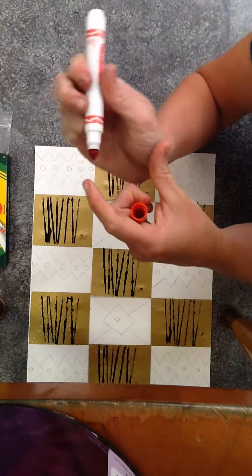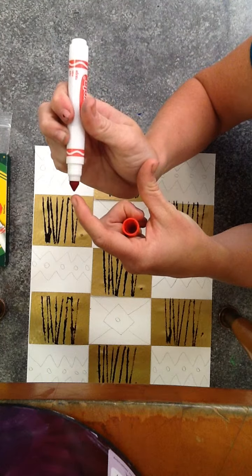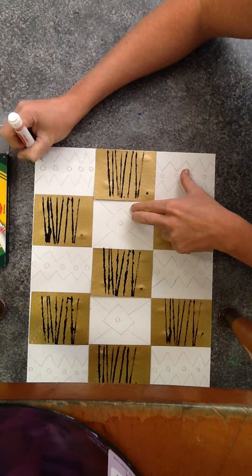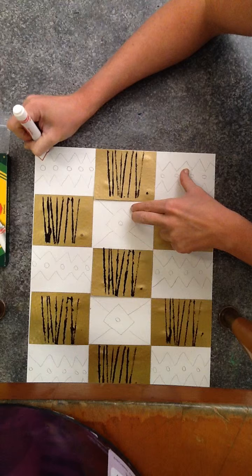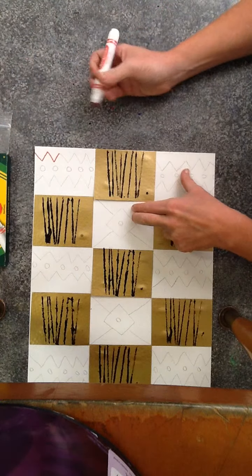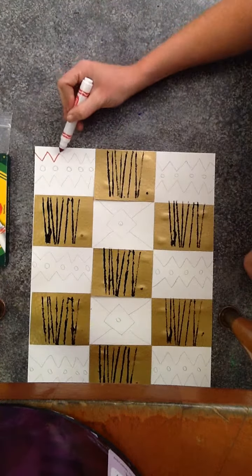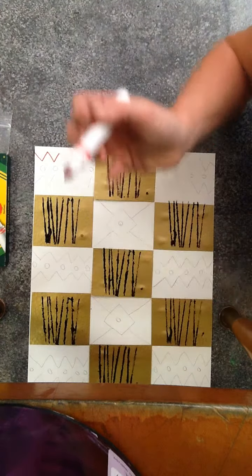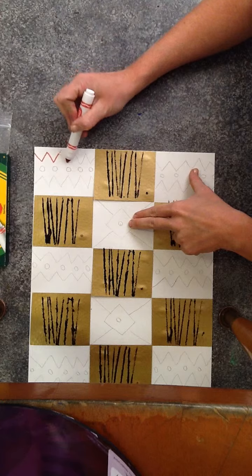So if I use the very tip of my marker, it's going to make a very fine line like this. Fine, meaning thin. If I hold my marker at an angle and I use the side of my marker, it's going to make a thick line like this.